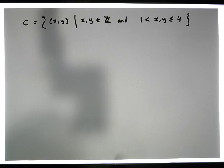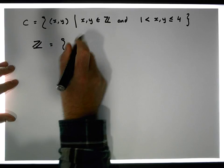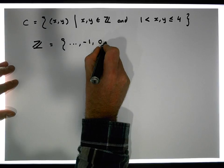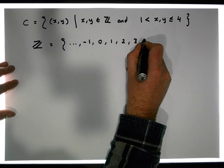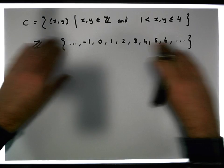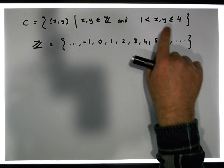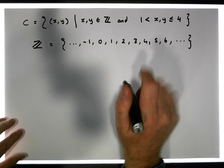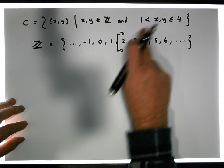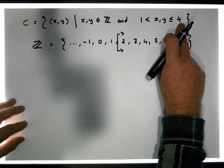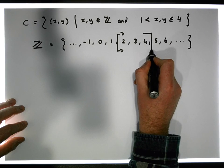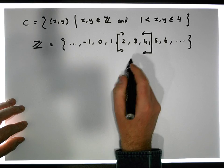So that notation means both x and y have to meet these two conditions. Looking at the integers — values like minus 1, 0, 1, 2, 3, 4, 5, 6, and so on — x and y need to be greater than 1. And they must be less than or equal to 4, which means less than 5. So the possible candidates are 2, 3, and 4.